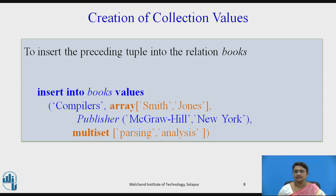For example, inserting into the books relation: 'Compilers' as the title, Smith and Jones as an array of authors, publisher information as McGraw-Hill and New York, and then 'parsing' and 'analysis' are taken as keywords in the form of a set.